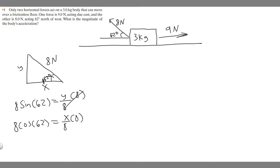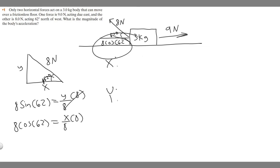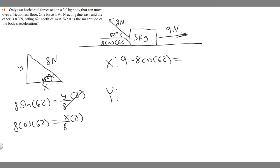Now let's think about the total forces. In the x direction, we have nine newtons going east and eight times the cosine of 62 going west — they're going opposite ways, so we subtract them. Nine minus eight times the cosine of 62 gives us the force in the x direction. If you calculate that, you get 5.24 newtons in the x direction.